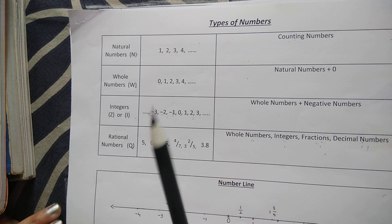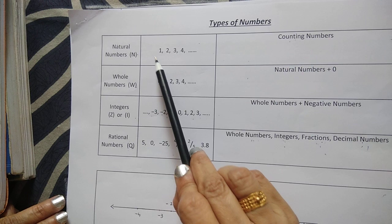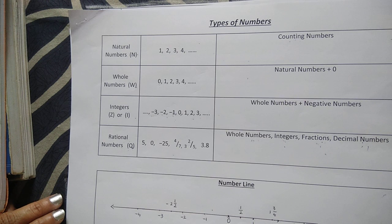Those are natural numbers, whole numbers, and integers. Natural numbers are also called counting numbers which start with 1, 2, 3, 4, 5, 6 and so on. And whole numbers start with 0 — all the natural numbers plus 0 are called whole numbers.